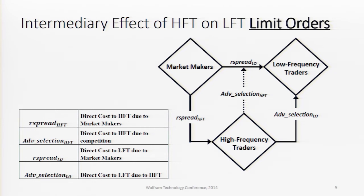From the HFT standpoint, they face a direct transaction cost due to market makers, represented by the realized spread calculated from HFT limit order data. The remaining transaction cost component — price impact — evaluates the direct cost to HFT due to competition against market makers, represented by the dashed arrow in our figure. If this transaction cost component grows larger, it implies it is more probable for HFT to outbid market makers and take their place, becoming the liquidity provider to LFTs.